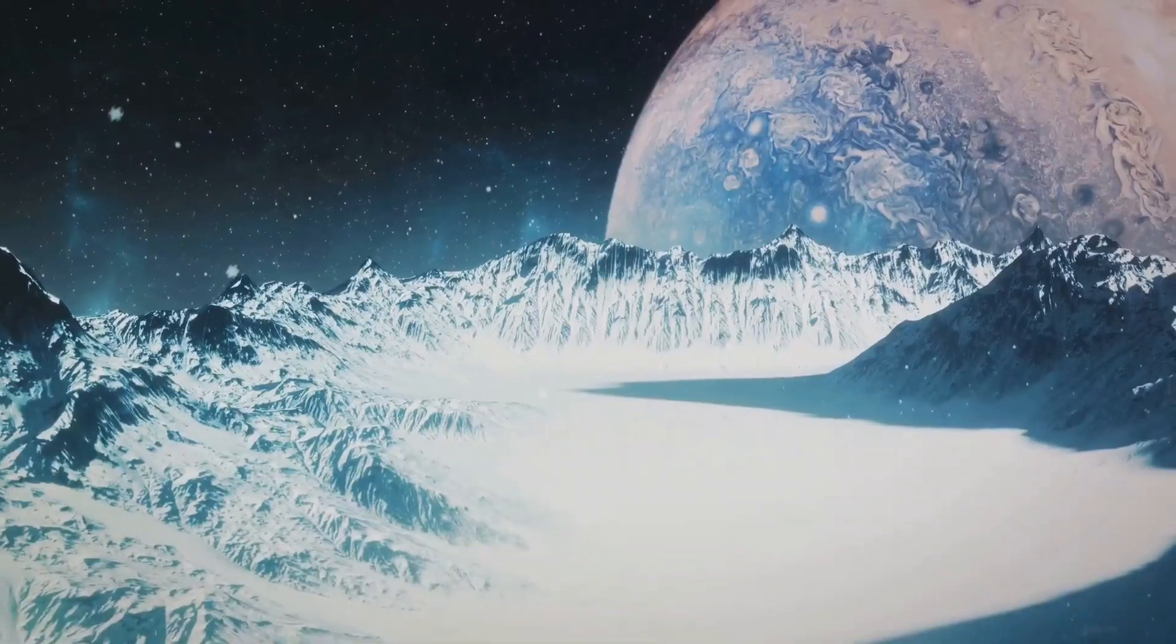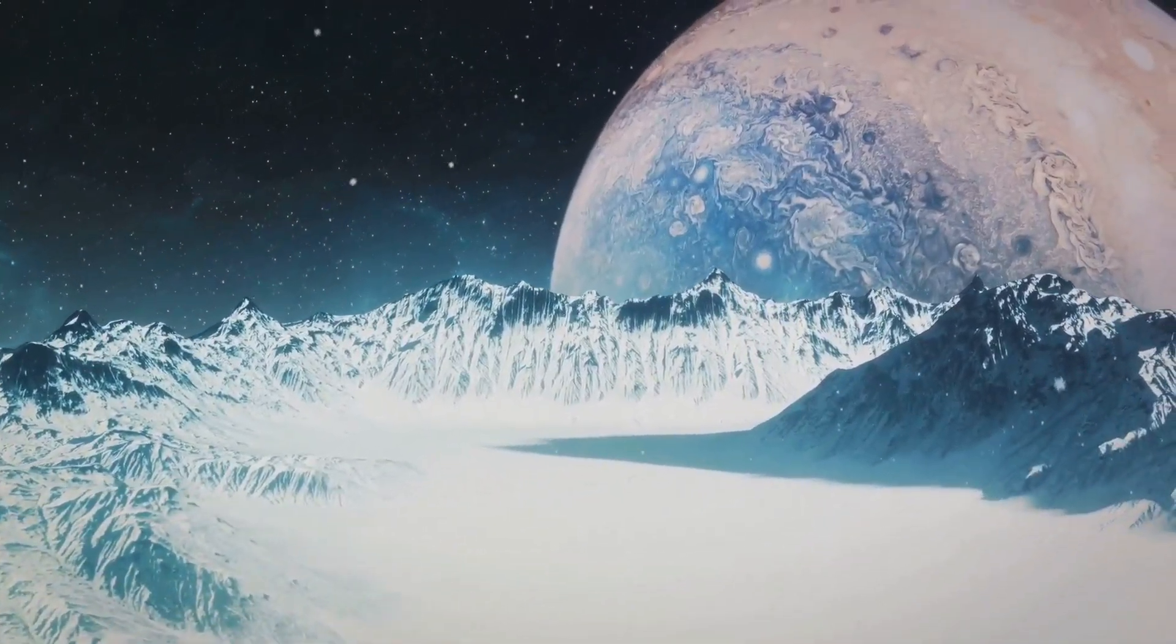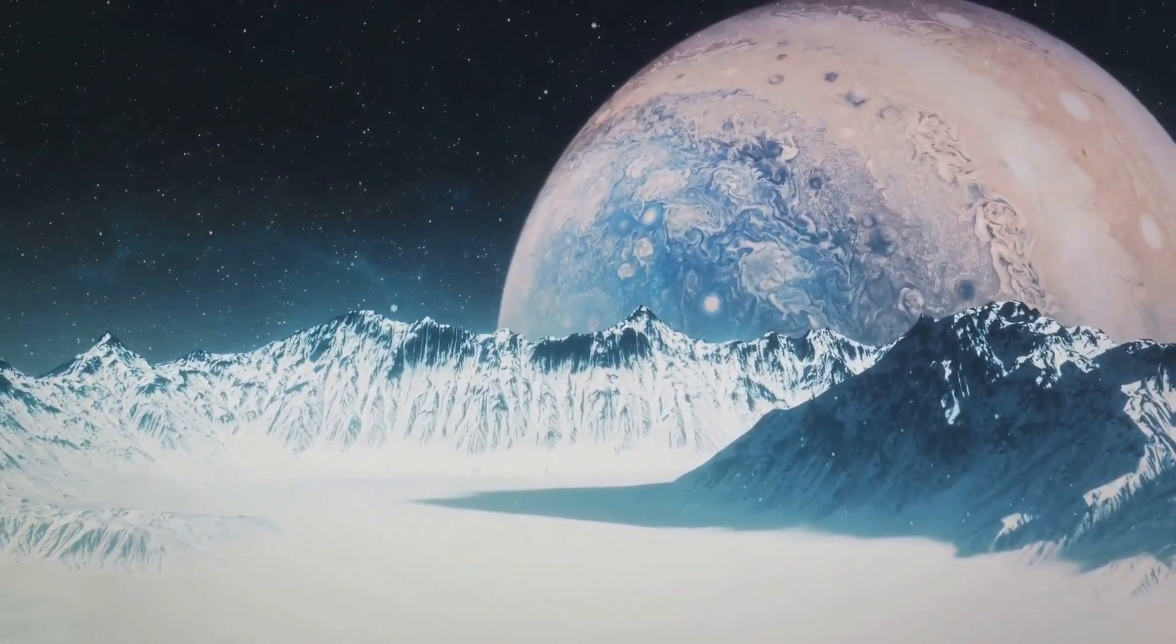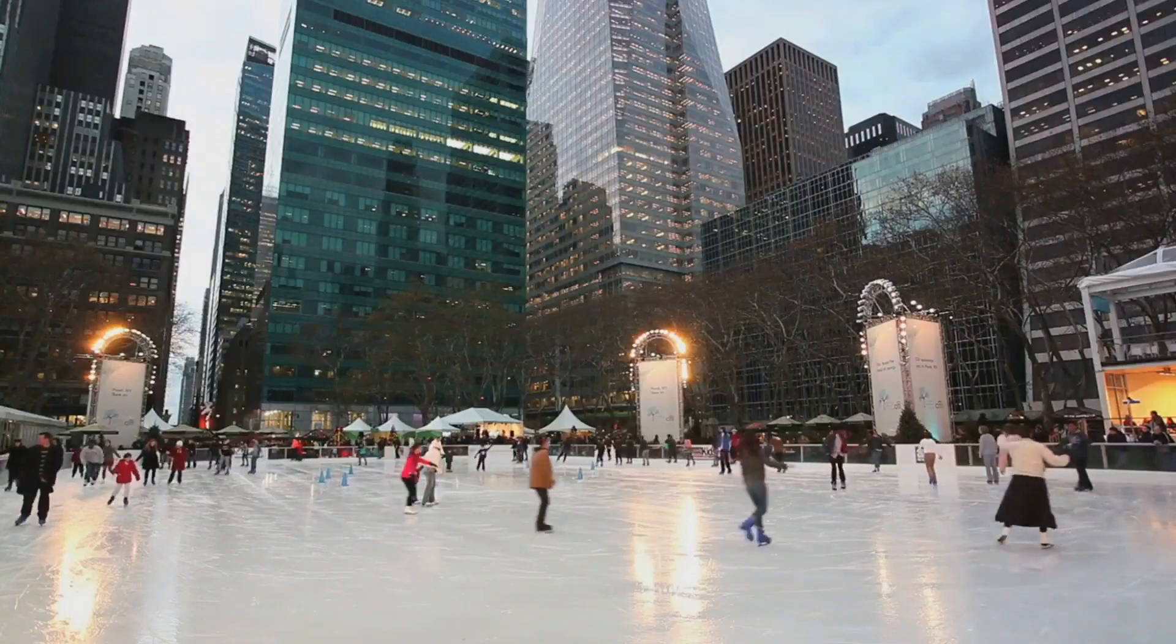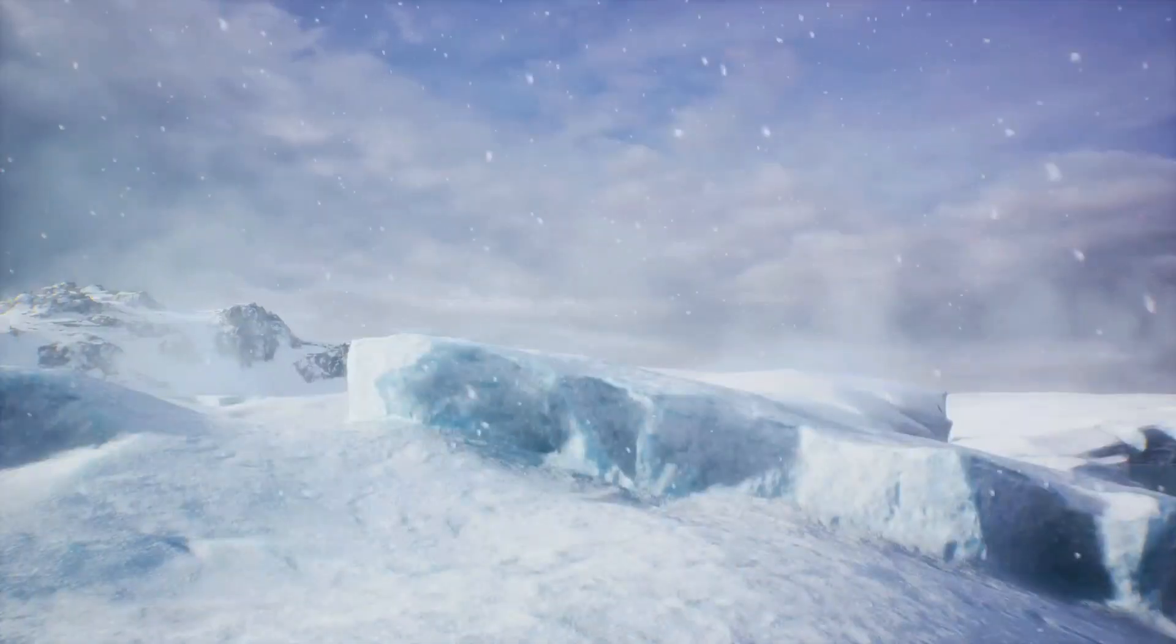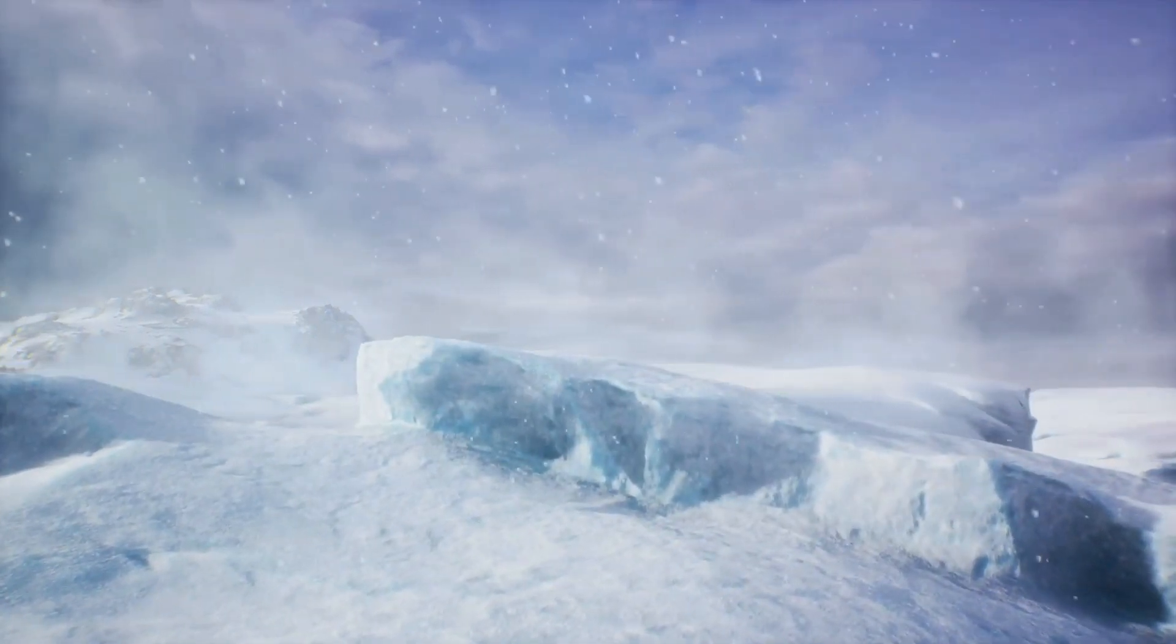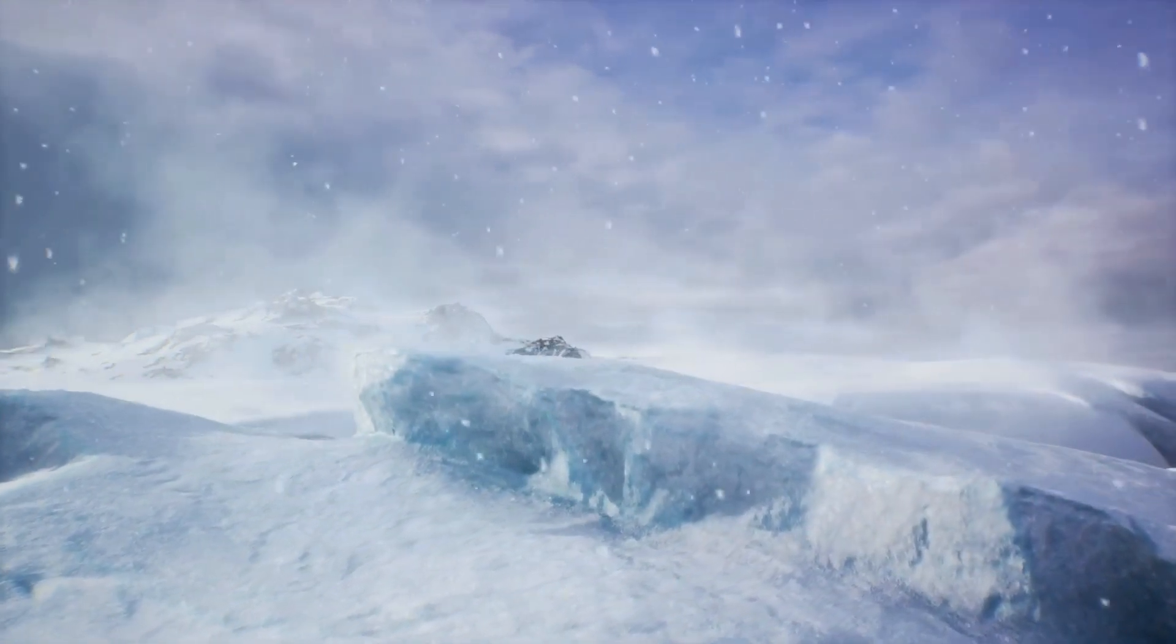With the dimming sunlight comes a chill unlike any we've known. Earth, now Neptune's moon, is subject to a bone-chilling cold that transforms our known climate zones into icy, inhospitable wastelands. Picture New York, London, Tokyo, all frozen over. The polar regions, already known for their harsh conditions, would become utterly uninhabitable.